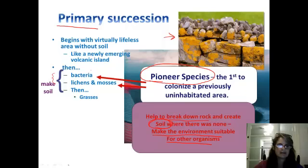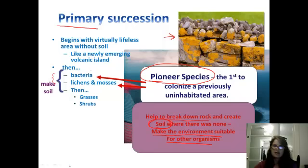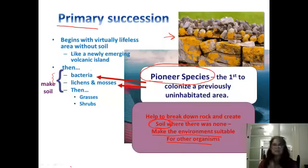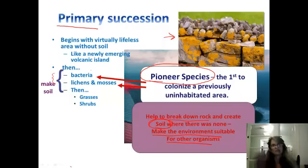Once we have a little bit of soil, then we can get tiny little plants that can live in just a little bit of surface soil, like perhaps grasses. And then once we have grasses and their life cycle and their roots breaking down soil more, and as the seasons go by the grasses die and leave biological material fertilizing that soil, then we can have perhaps shrubs that would come in.